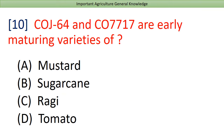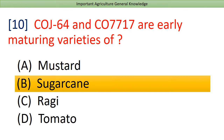CoJ64 and Co7717 are early maturing varieties of? Answer: Sugarcane.